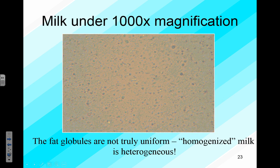Milk is an example of a colloid. To the naked eye it looks uniformly mixed, but under intense magnification we can see that the fat globules are not truly uniformly distributed. The process of homogenization breaks up the fat molecules into small enough chunks that even though they're not truly uniform — visible under magnification — they stay mixed because of the random motions of water molecules inside the milk.